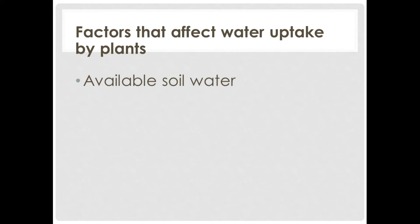First we want to look at available soil water. Plants can only absorb soil moisture that is free. If there is hygroscopic moisture, absorption is very low. As a reminder, hygroscopic moisture is found when the soil moisture is yielded below permanent wilting point.